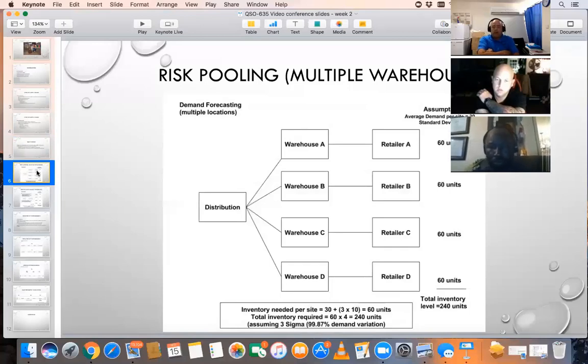This is a very undisciplined supply chain, obviously. So we would have to have 60 units per site. The distribution center would have to make sure that the warehouses have a total of 240 units of inventory to meet the expected demand of retailers A, B, C, and D. Does everybody understand how that works?